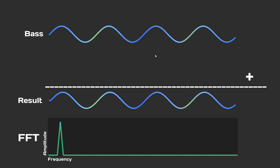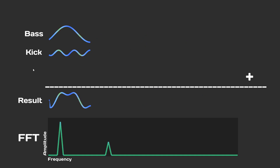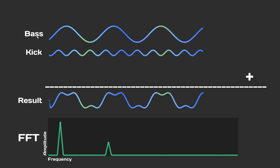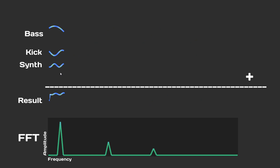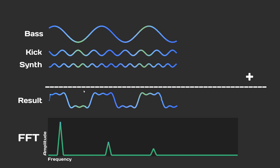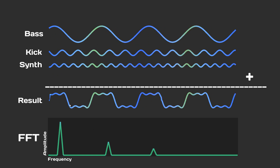Now if we add another sine wave at a higher frequency and we combine these together, we will see more of a square wave happening in the result. Let's call it the kick, because the kick is a little bit higher than the base, and we see another spike in the Fast Fourier Transform. We could go on and create an even higher frequency — we'll call it a synth — and you can see more of a rectangular waveform forming, with another spike at a slightly higher frequency.